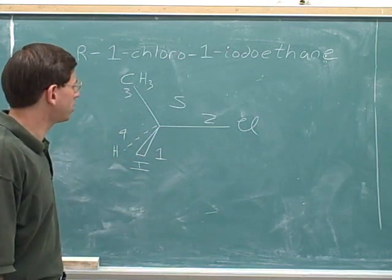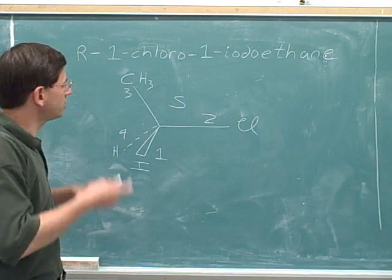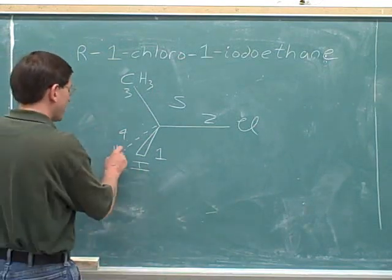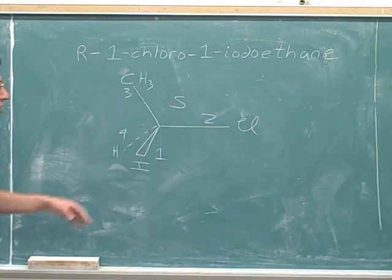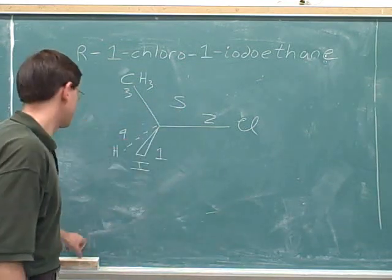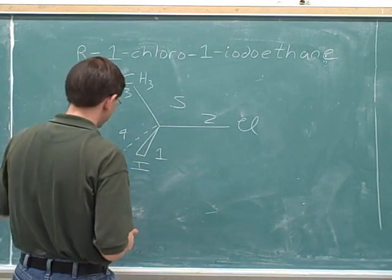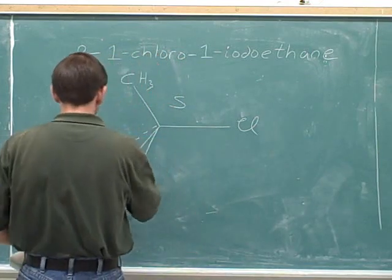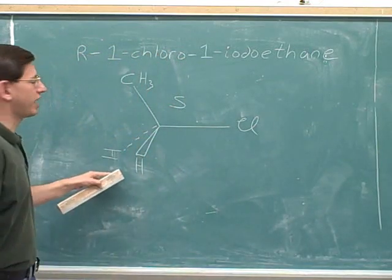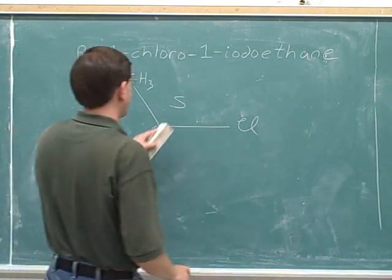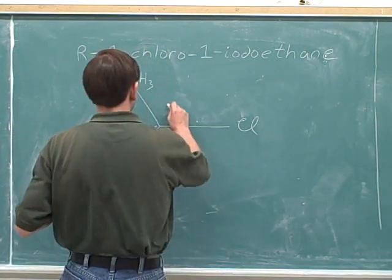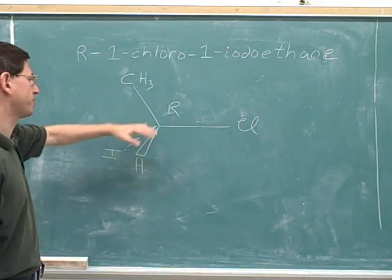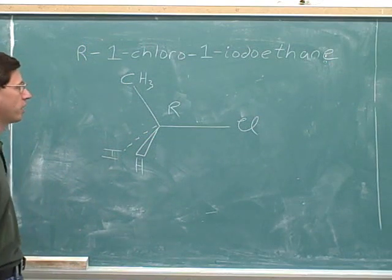That's no big disaster. It just turns out that our initial guess didn't give us an R. We can just use the single swap rule — swap any two groups and that will give us an R configuration. The most intuitive groups to swap are the iodine and the hydrogen. If you keep the picture as-is, it would be wrong because it would be S. So let's swap the iodine and the hydrogen. We've swapped them, so now the configuration is no longer S — this drawing is showing an R configuration, which is what we wanted. This is the correct drawing of R-1-chloro-1-iodoethane.